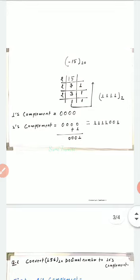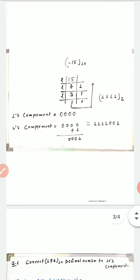If we take the ones complement of 1111, it is 0000 — all four ones get replaced by zeros. So 0000 is the ones complement. But the question asks for the twos complement, so twos complement means adding 1 into the ones complement. Adding 1 to 0000 gives 0001.